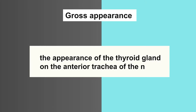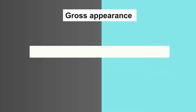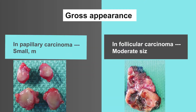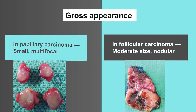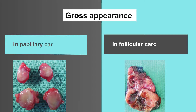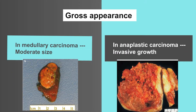Feature number seven is gross appearance, which means the appearance of the thyroid gland on the anterior trachea of the neck. In papillary carcinoma, small and multifocal. In follicular carcinoma, moderate size and nodular. In medullary carcinoma, moderate size. In anaplastic carcinoma, invasive growth.